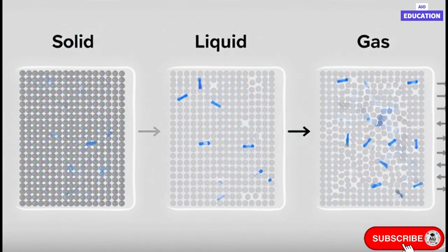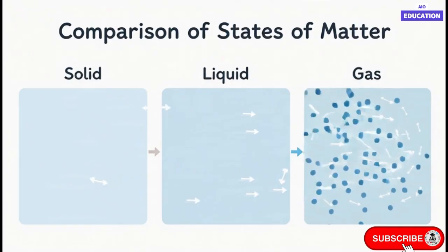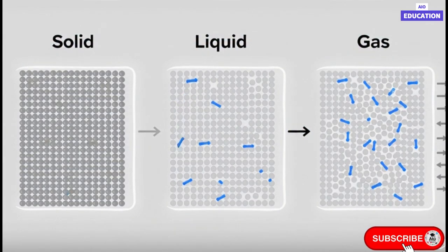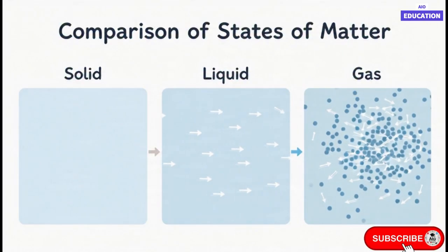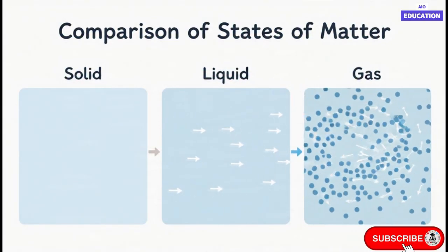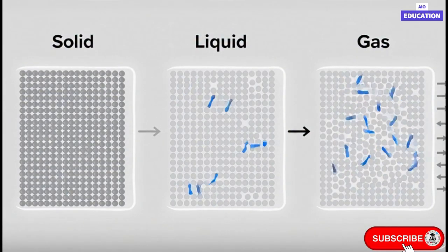In solids, the particles are very closely packed together in an orderly arrangement. The inter-particle space is very small, and the force of attraction between the particles is extremely strong. Because of this, solids have a definite shape and a fixed volume. The particles cannot move freely but can only vibrate about their fixed positions.